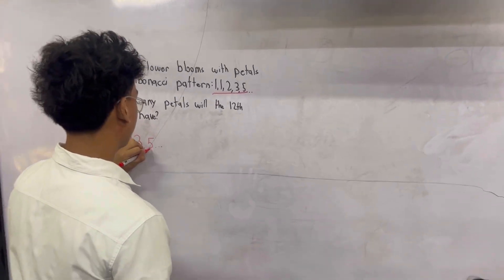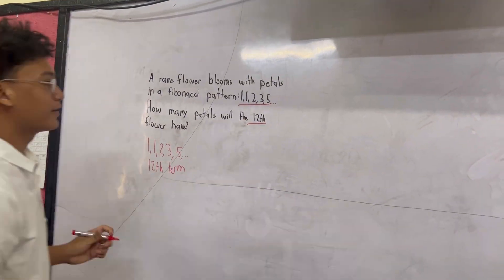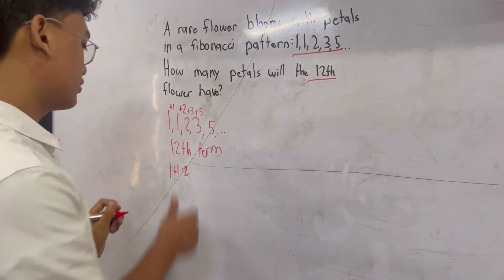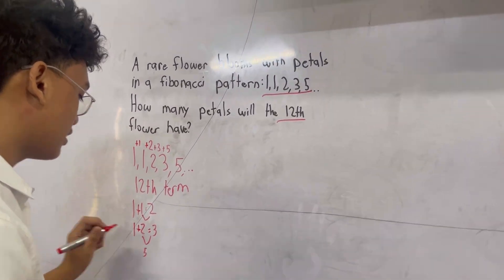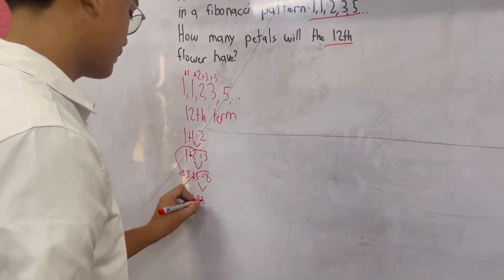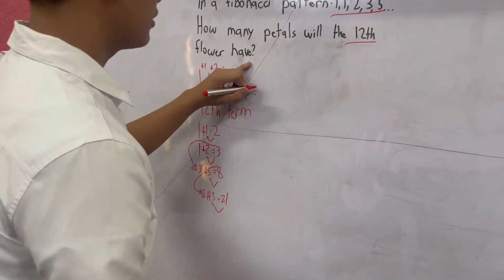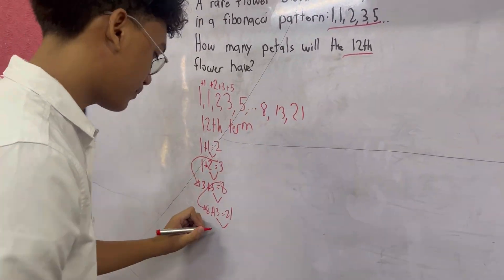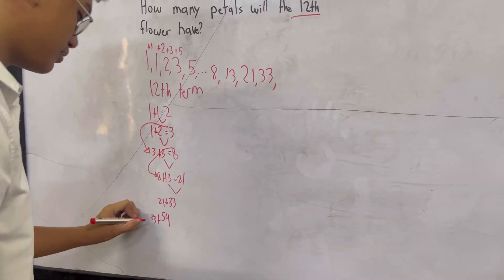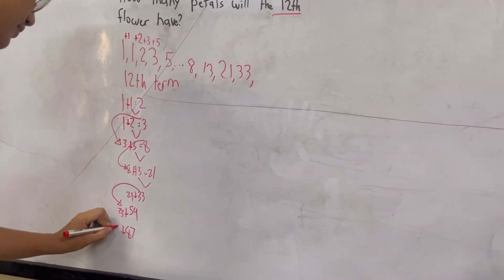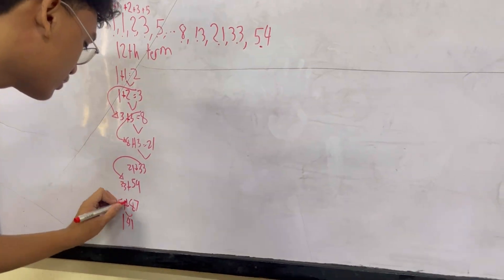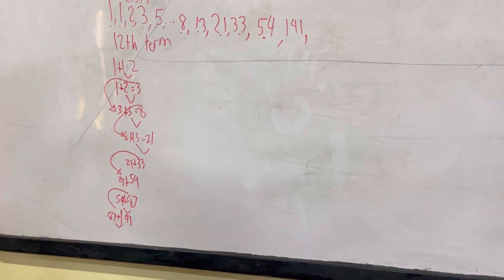To find the 12th term of the Fibonacci pattern 1, 1, 2, 3, 5, we will add the previous two terms each time. First, 1 plus 1 equals 2; 2 plus 1 equals 3; 2 plus 3 equals 5; 3 plus 5 equals 8; and so on. When you reach the 12th term, that will be the final answer.